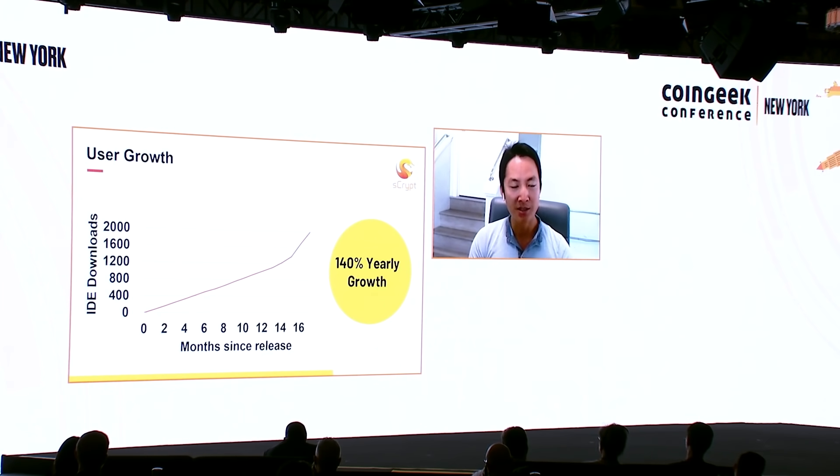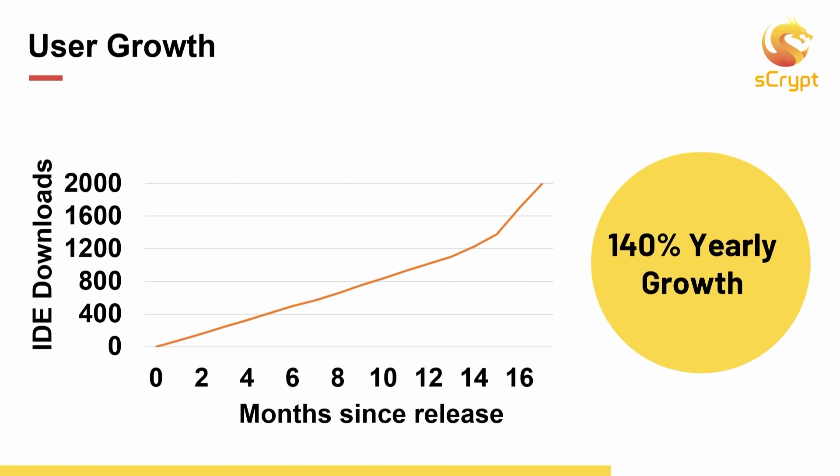As for what we have achieved so far, we launched at CoinGeek London last year before COVID — about 18 months ago. We have received a lot of enthusiasm from developers. Starting from when we released with zero users, today I just checked and we just reached 2,100. That's quite rapid growth, especially since we haven't done any marketing yet. If you're a developer and you haven't tried our IDE, I strongly recommend you go to sCrypt.io and download our desktop IDE today.